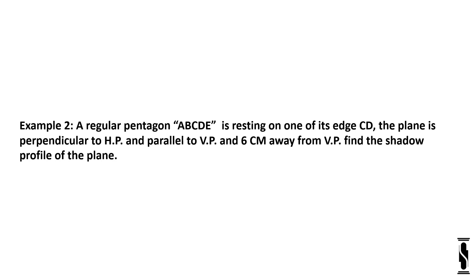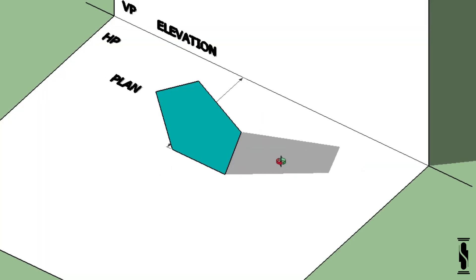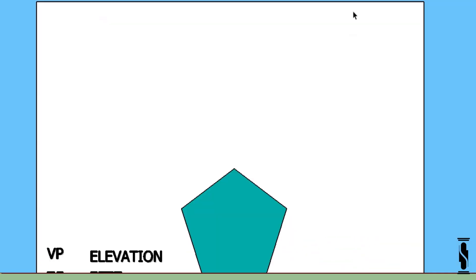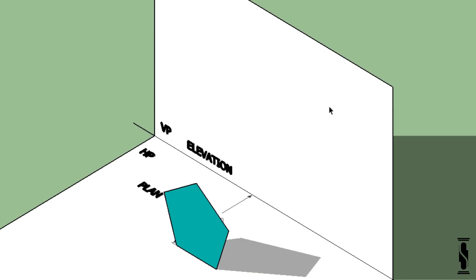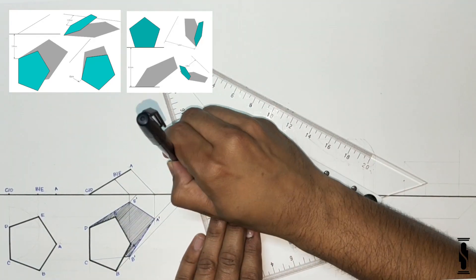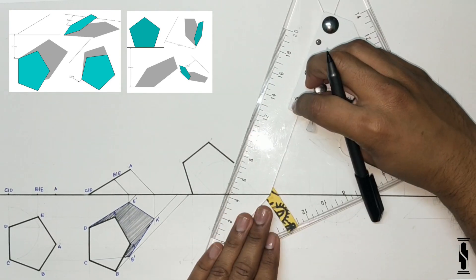Example 2. A regular pentagon ABCDE is resting on one of its edges CD. The plane is perpendicular to HP and parallel to VP, and 6 cm away from VP. Find the shadow profile of the plane. Now take a look at the 3D representation. We can see that the shadow of the plane is starting from its base and falling on HP.